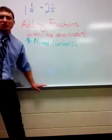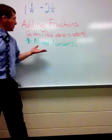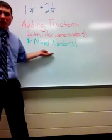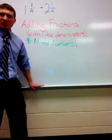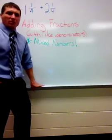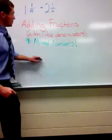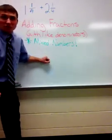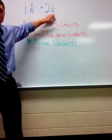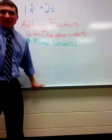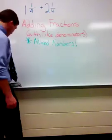We're going to look at adding fractions with like denominators when mixed numbers are involved. This adds a little bit to the difficulty of the problem. The first thing we want to look for is to make sure that you do have like denominators, and the first step is going to be to add the fractions together.